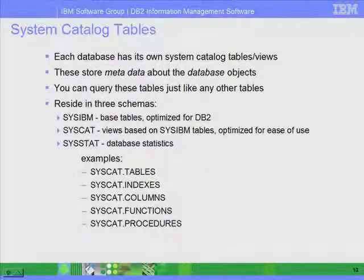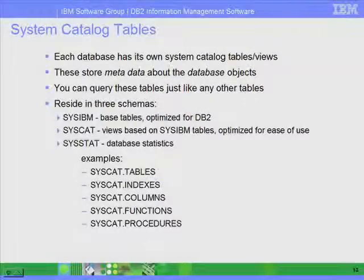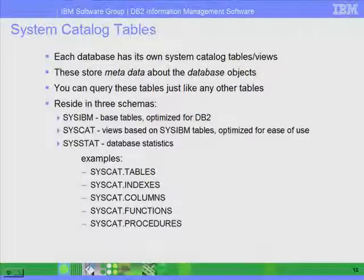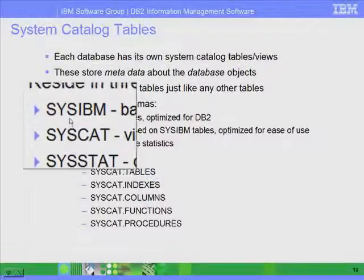We also have system catalog tables. These are tables from the system that store information about the system — known as metadata, meaning data about your data. They store information about what tables, columns, views, and indices exist. There are three schemas specific to catalog tables: sysibm, syscat, and sysstat. Sysibm are the base tables, syscat are the views, and sysstat are views for database statistics.